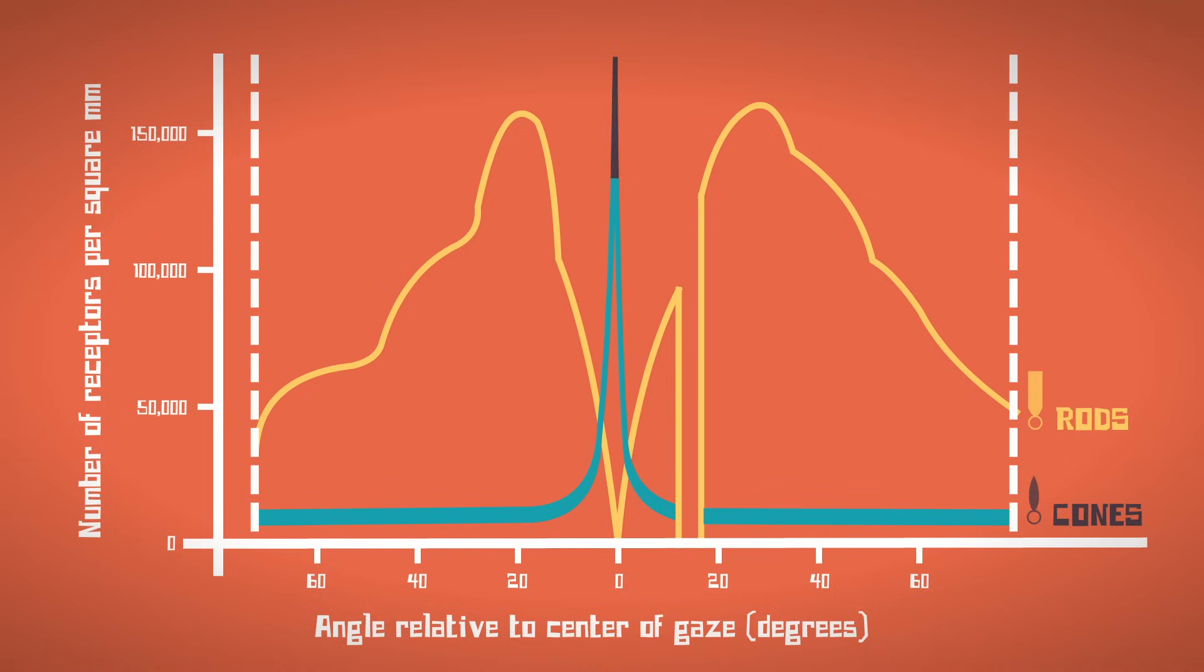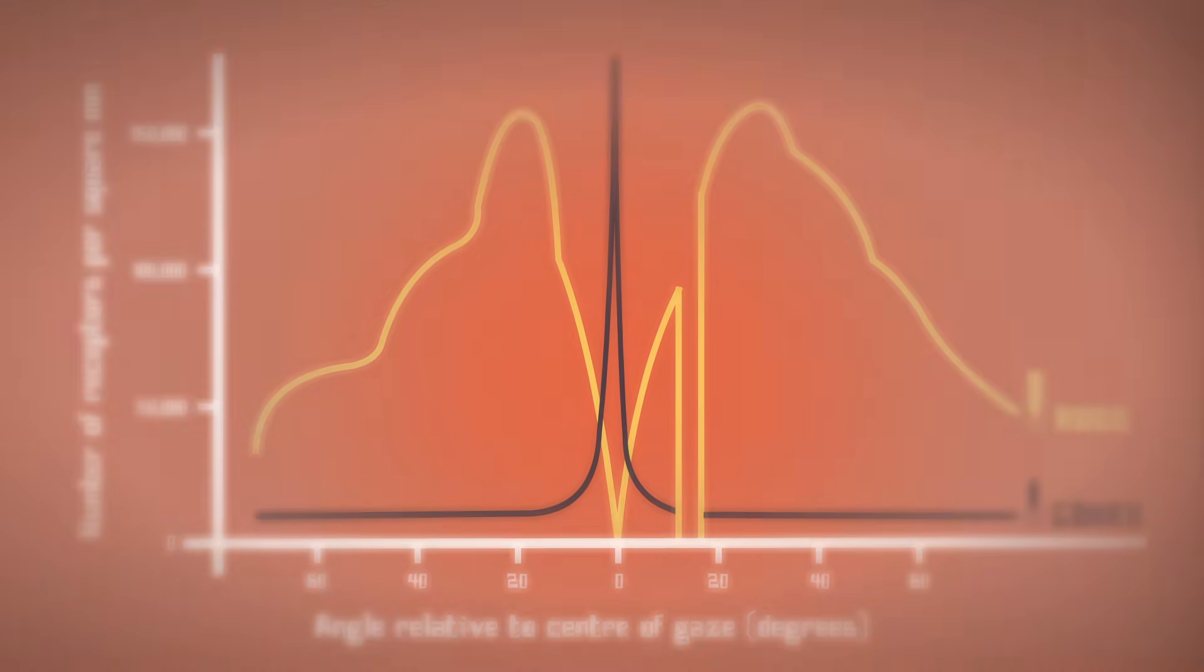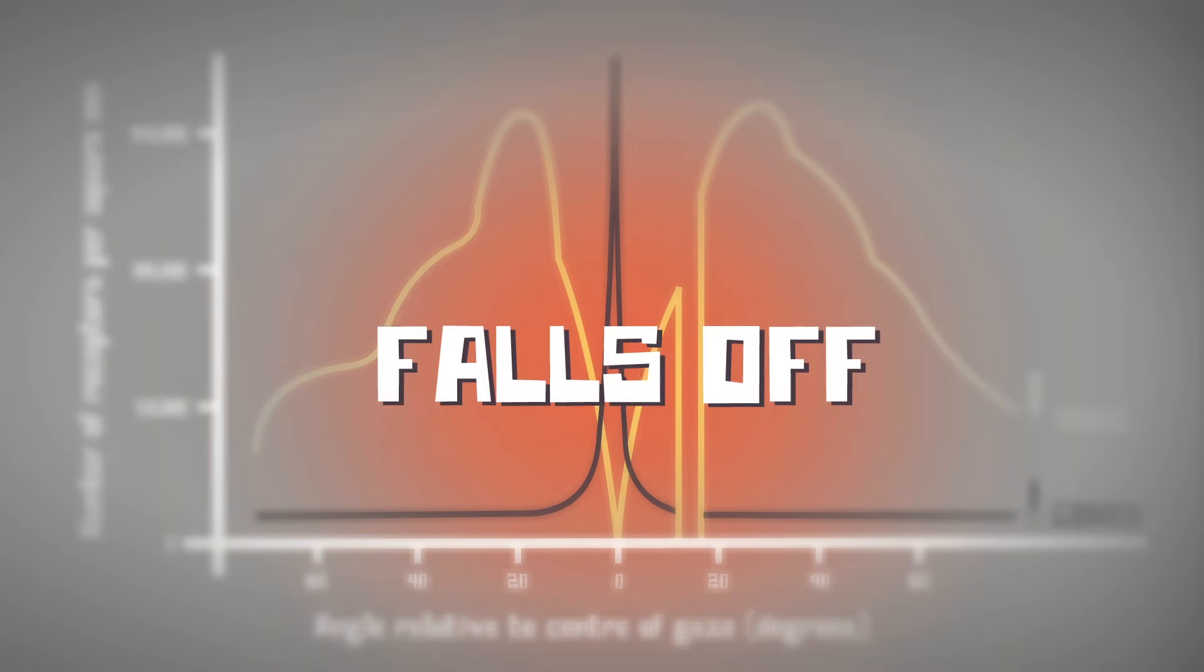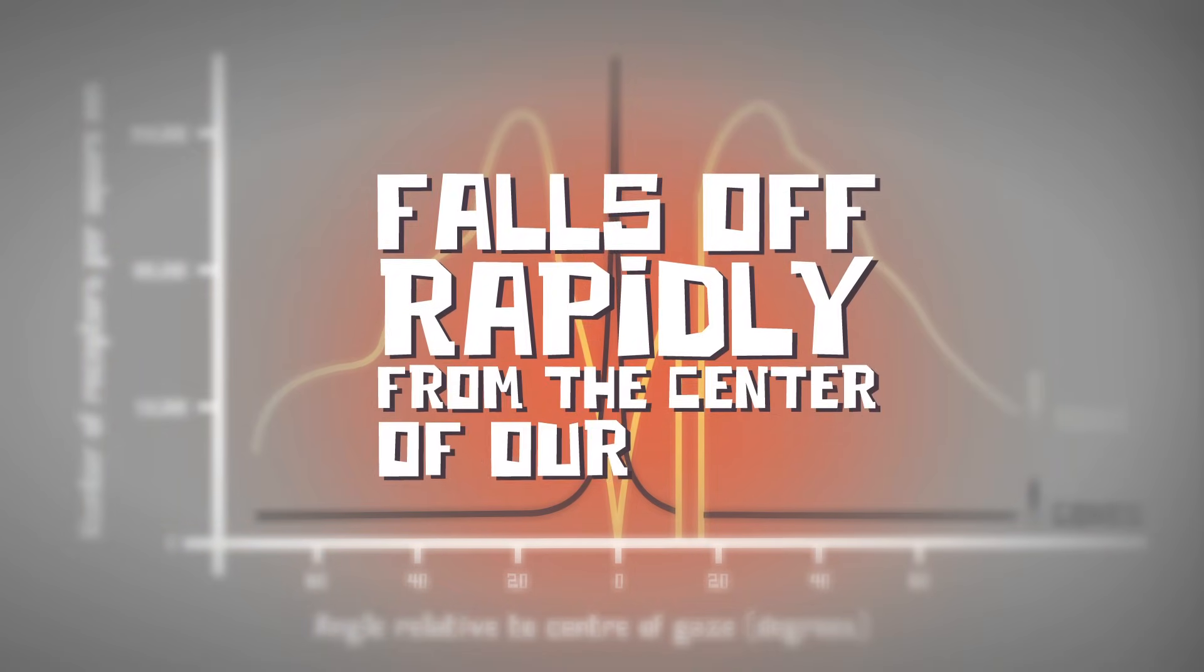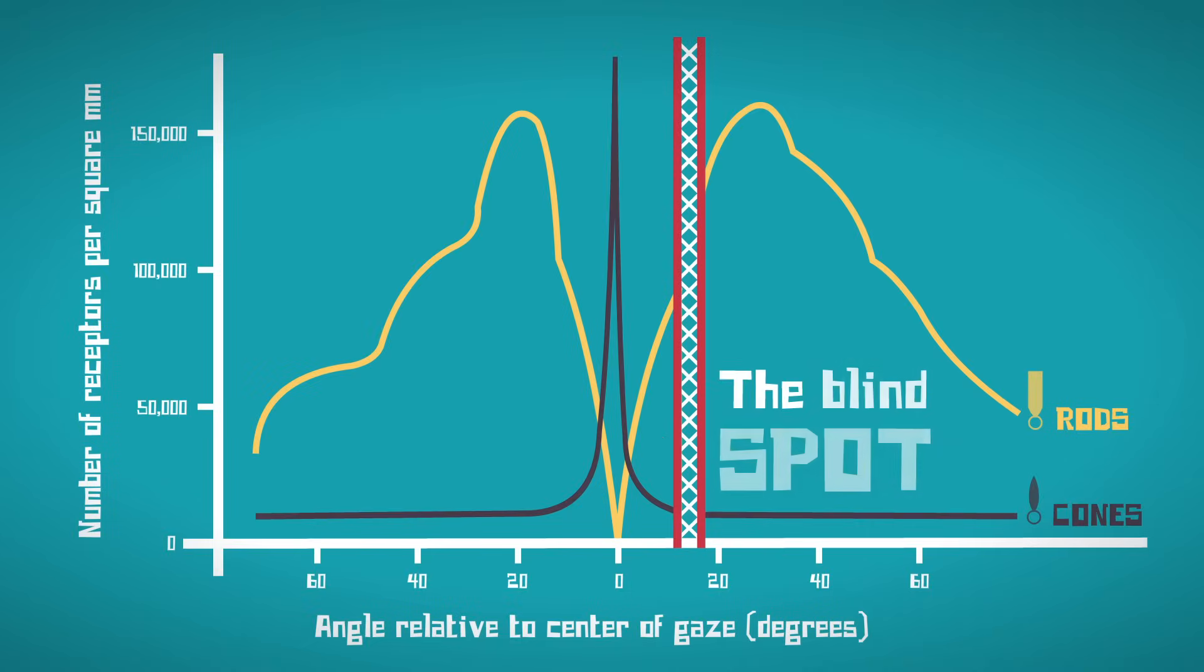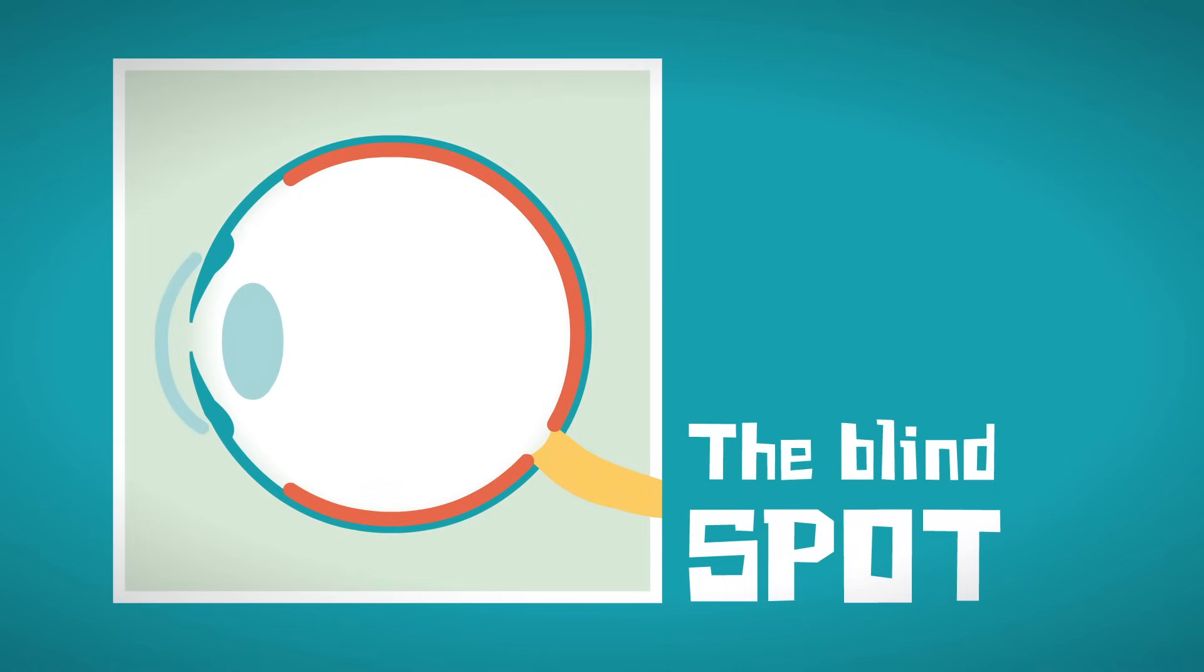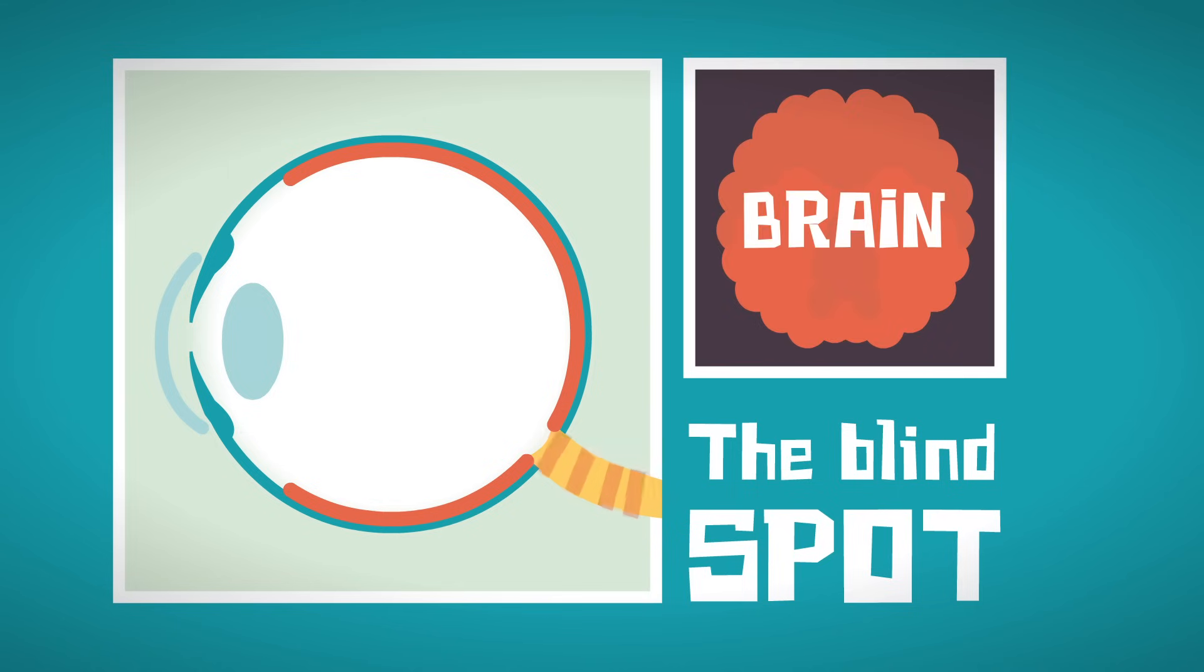However, you still perceive blue there because your brain fills it in from context. Also, the edges of our retinas have relatively few receptors for any wavelength light, so our visual acuity and ability to see color falls off rapidly from the center of our vision. There is also an area in our eyes called the blind spot, where there are no photoreceptors of any kind. We don't notice a lack of vision there because, once again, our brain fills in the gaps.